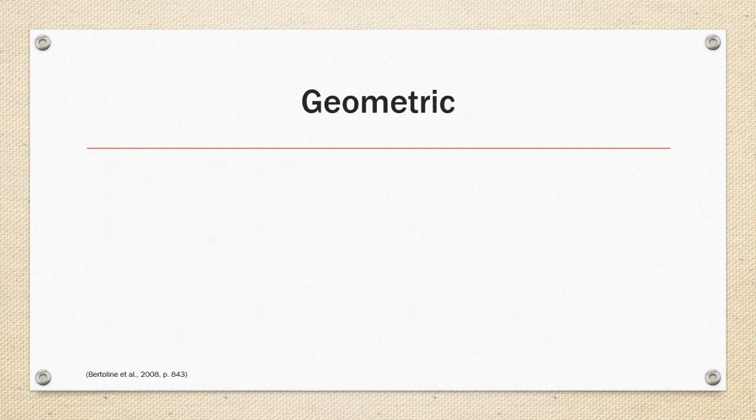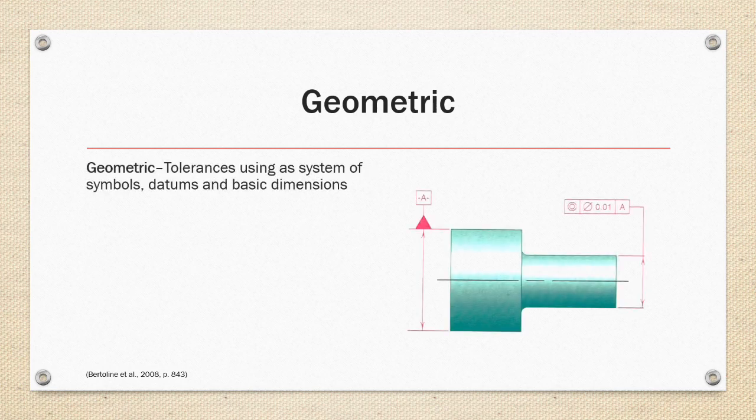The second way to express tolerance is geometric. Geometric tolerancing uses a system of symbols and datums and basic dimensions.